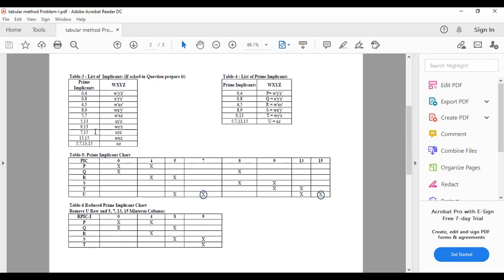Next, list the implicants. Then create the prime implicant chart, followed by the reduced prime implicant chart. This is how you have to form it.